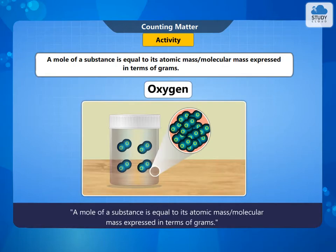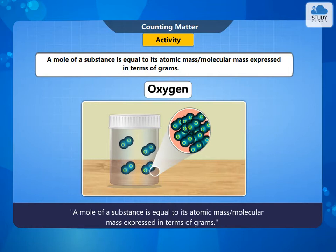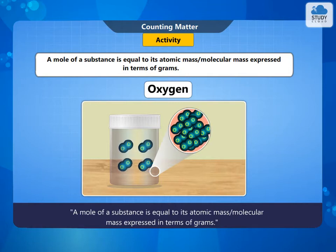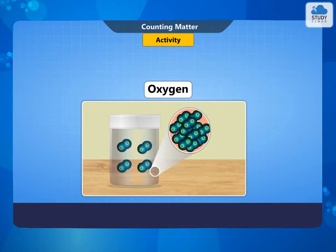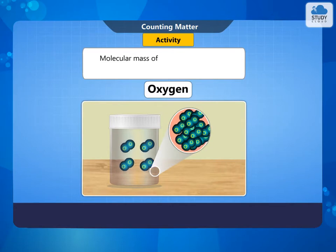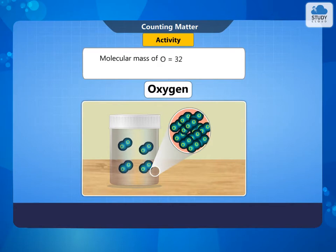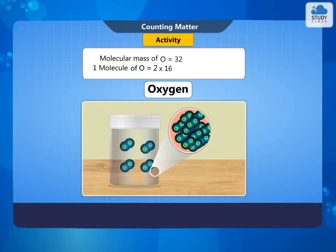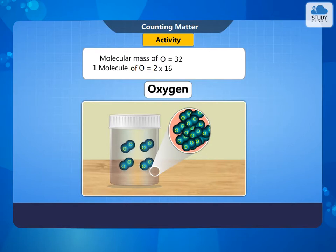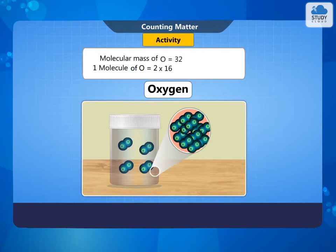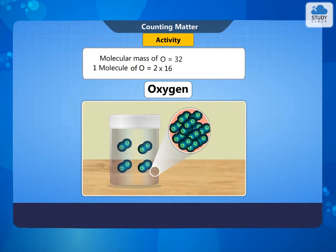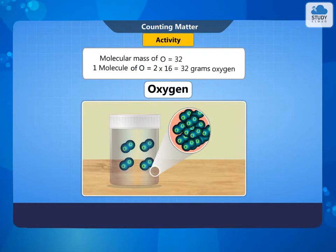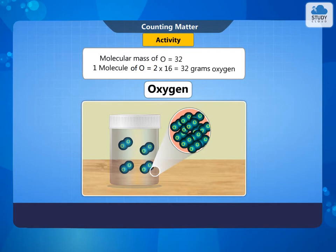A mole of a substance is equal to its atomic mass or molecular mass expressed in terms of grams. For example, the molecular mass of oxygen is 32, as one molecule of oxygen contains 2 atoms of oxygen and the mass of each atom is 16. Hence, one mole of oxygen is equal to 32 grams of oxygen.